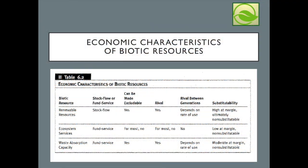In summary, we discussed three biotic resources in this lecture. This table helps identify the economic characteristics of the three: renewable resources, ecosystem services, and waste absorption capacity. Renewable resources are stock-flow resources and can be made to be excludable — for example, forests can be owned by Weyerhaeuser and used as sources for lumber and profit. Renewable resources are also rival in that the rate of use impacts what can be consumed, for example, across generations.